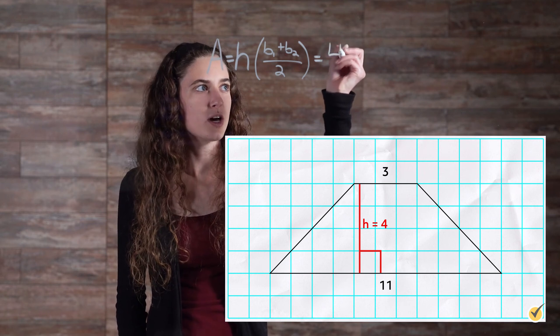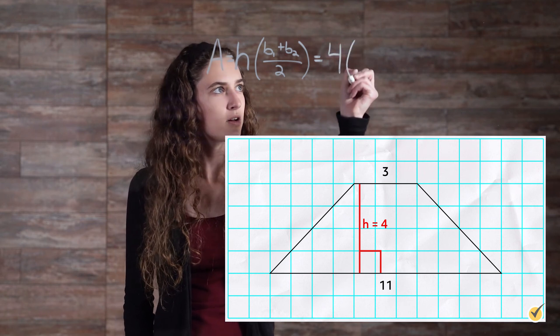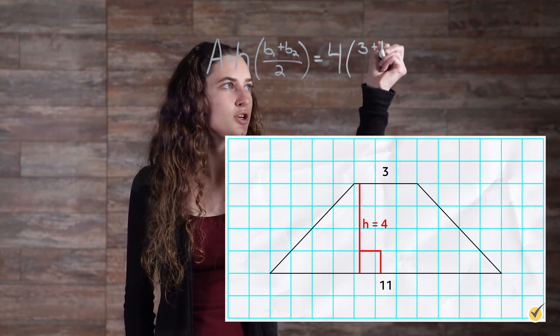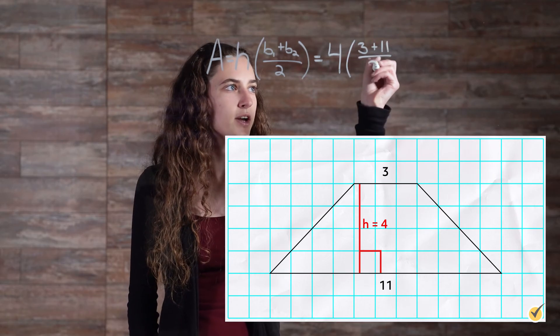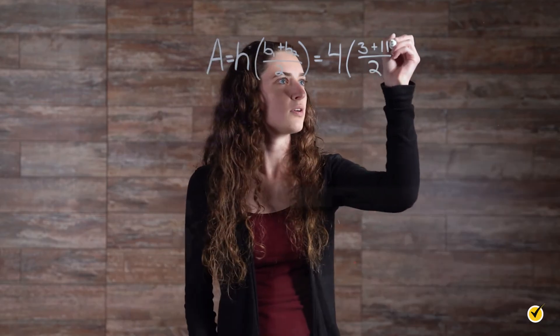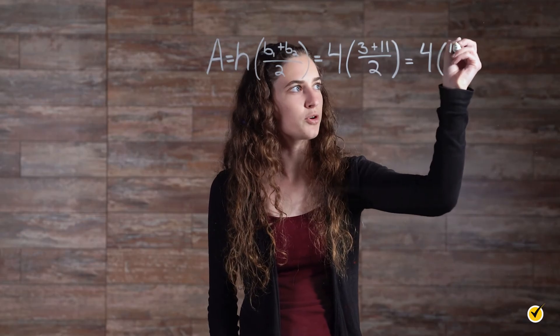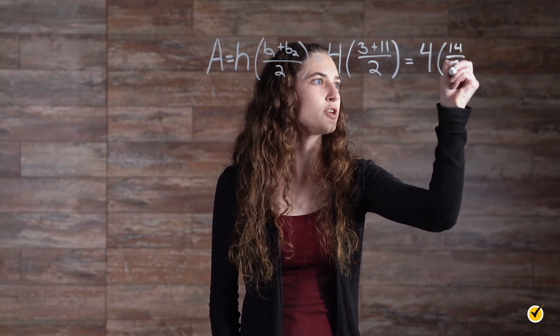Area of the trapezoid equals the height, which is 4, times base one, which is 3, plus base two, which is 11, divided by 2. This equals 4 times 3 plus 11, which is 14, divided by 2.